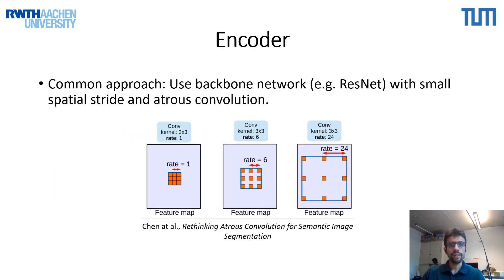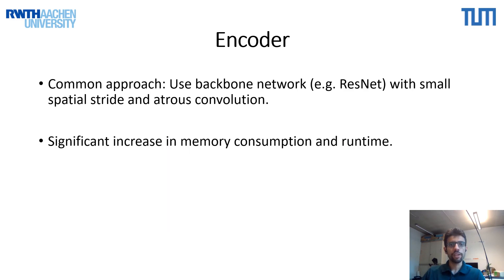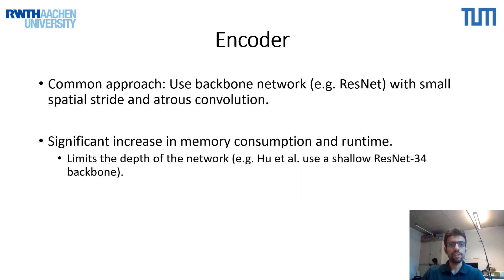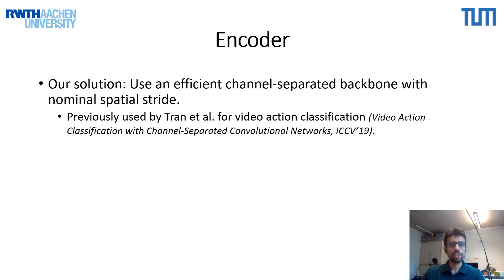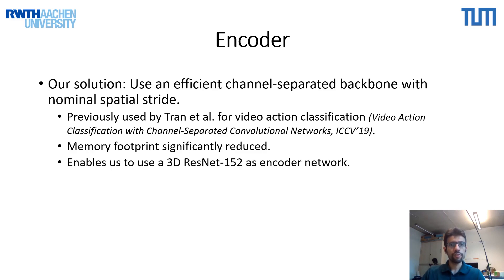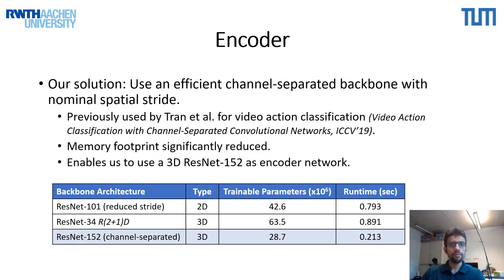In terms of network architecture, for segmentation tasks it is nowadays common to use ResNets with a low spatial stride and atrous convolutions. This technique was popularized by the DeepLab framework for semantic image segmentation and it yields good results, but it has the drawback of increasing the memory footprint and runtime of the network, which in turn limits the depth and size of the network. To mitigate this problem, we use an efficient channel-separated backbone with a nominal spatial stride, previously used for video action classification, which has a dramatically smaller memory footprint. This allows us to use a 152-layer variant of ResNet as the encoder network, which still has fewer trainable parameters and a lower runtime than the backbones used by existing works.